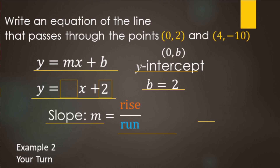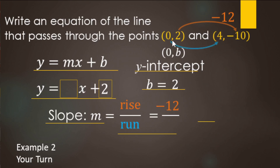Next we calculate slope — still rise over run, similar to on a graph where we count squares. For the rise, we're looking at the y values: from two to negative ten. Start at two and count backwards to negative ten — that's going down twelve. You can think of it like temperature: starting at two degrees above zero and ending at ten degrees below zero means it got colder by twelve degrees, so that's down twelve. For the run, we're looking at the x's: starting at zero, ending at four — it went over four.